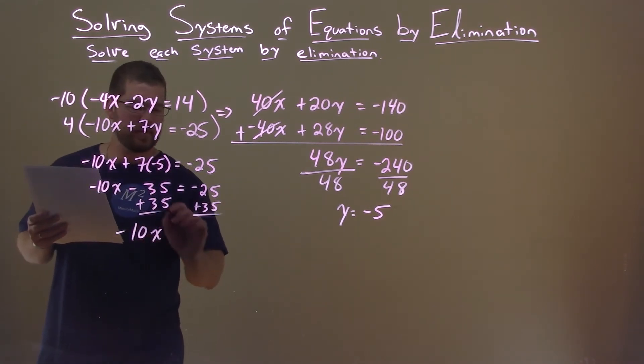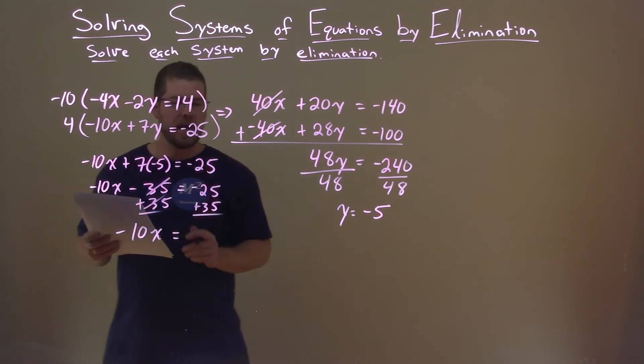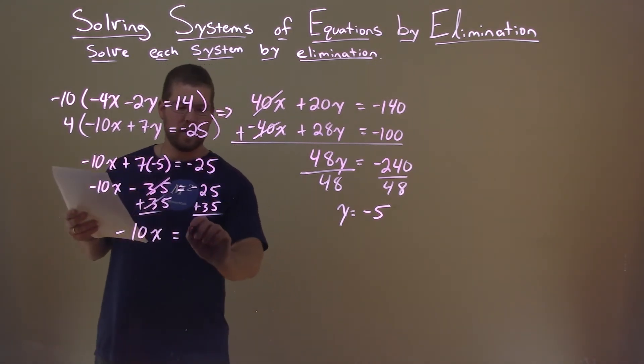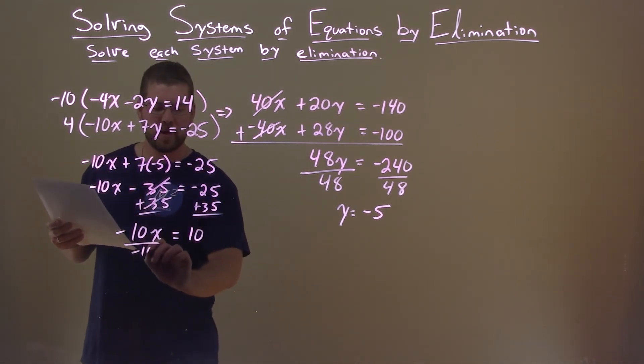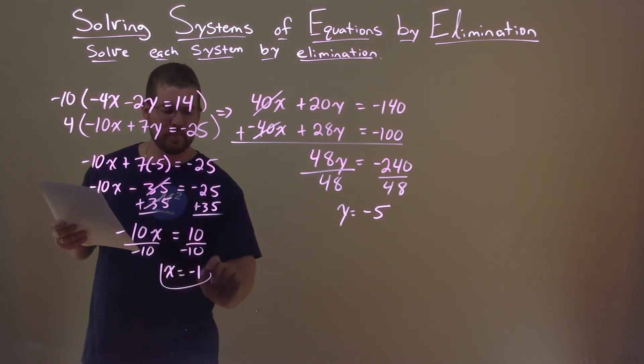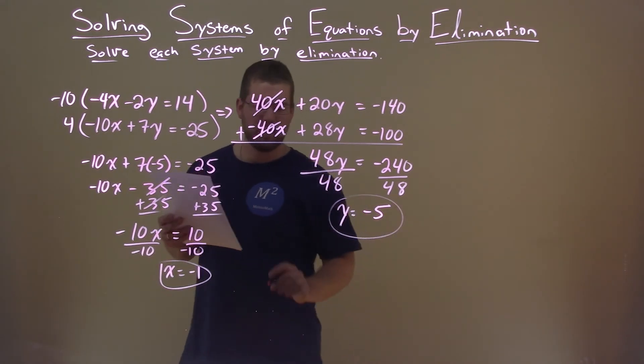Negative 10x is left here. 35 is canceled. And negative 25 plus 35 is a positive 10. Divide both sides by negative 10. And good old x is by itself to be a negative 1. We got our x value. We got our y value.